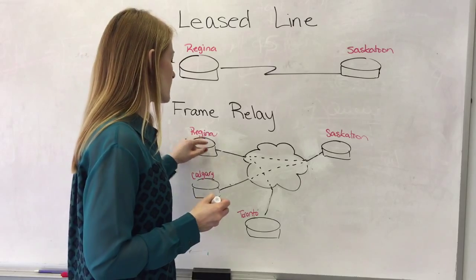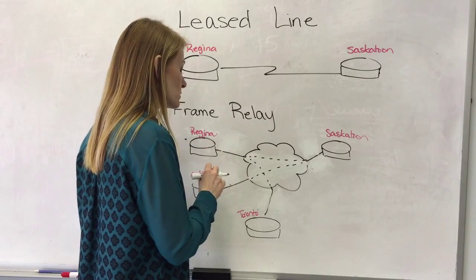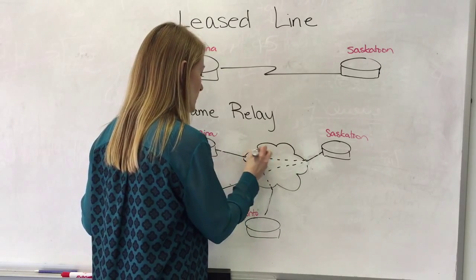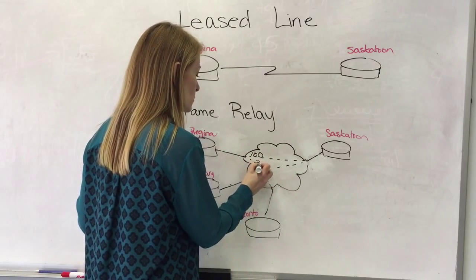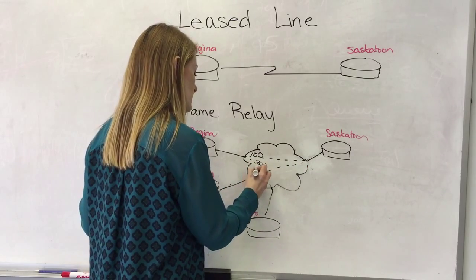Let's say that Regina has a DLCI value. Let's say Regina to Saskatoon here this is 100. Regina to Toronto we'll say is 200. Calgary to Saskatoon we'll say is 300.